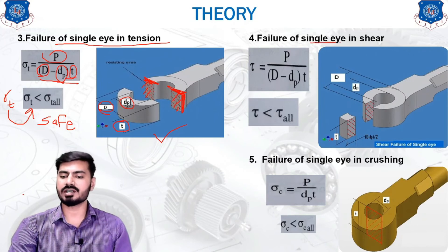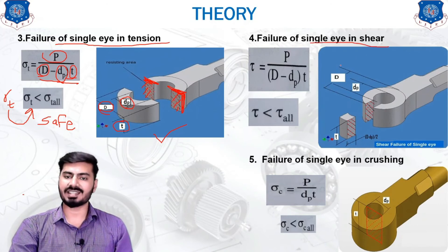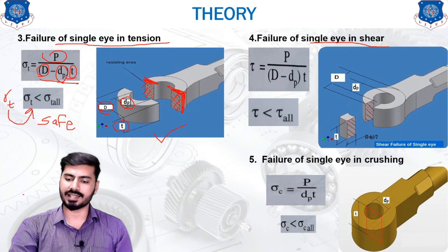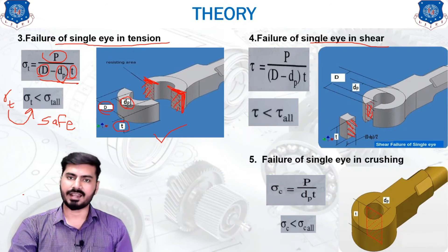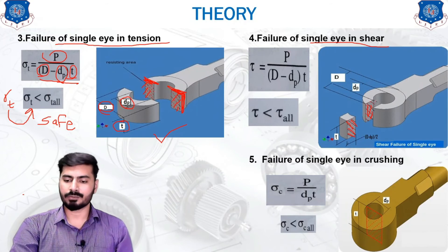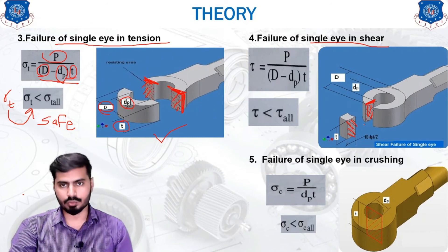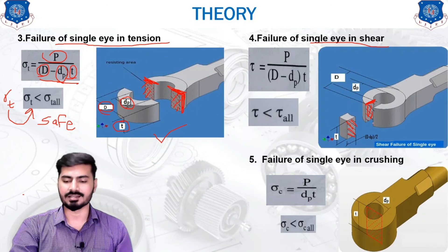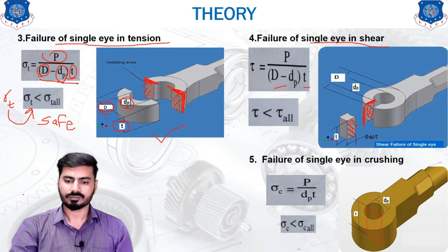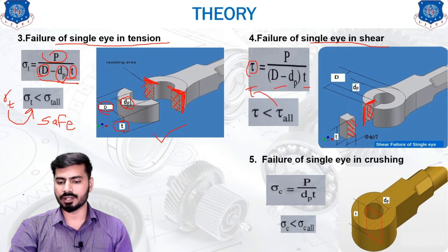Similarly, we check for shear stress. Under the shearing condition the single eye fails on two surfaces. The distance on each side is (D − dp)/2, but since there are two surfaces the total area is (D − dp) × t. P upon this area gives the shear stress. If the calculated shear stress is less than the given allowable value, the design is safe.